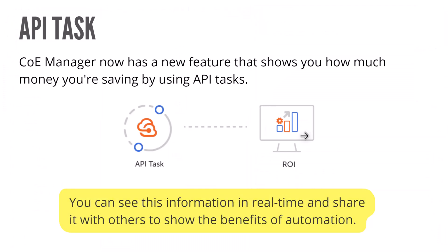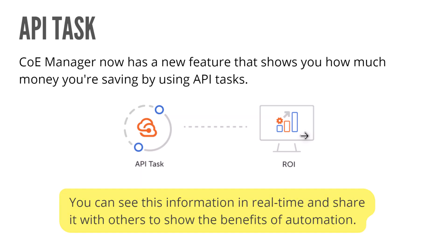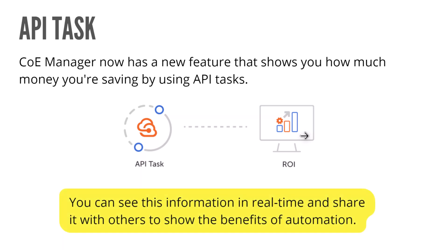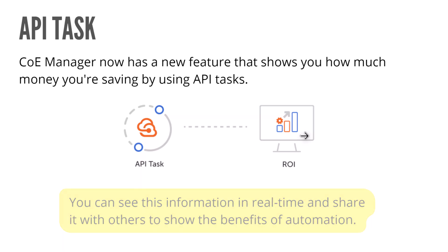The next thing within API task is COE manager. COE manager is a product from Automation Anywhere that helps you measure your automations — success, benefit realization, ROI calculation, and all that. COE manager now has a unique feature that shows you how much money you are saving by using API task. You can see all that in real time, once you integrate and onboard your API task onto COE manager, which is just an API integration.